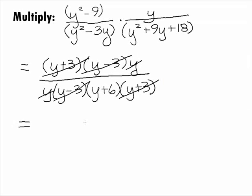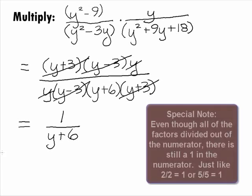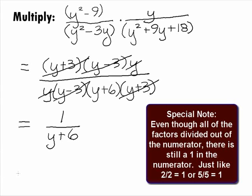When we do this, we are left with 1 over y plus 6. Note that even though all of the factors in the numerator were divided out, there is still a 1 in there. It is easy to think there is nothing left and make the numerator disappear. But when you divide a factor by itself, there is actually a 1 there. Just like 2 divided by 2 equals 1 or 5 divided by 5 equals 1.